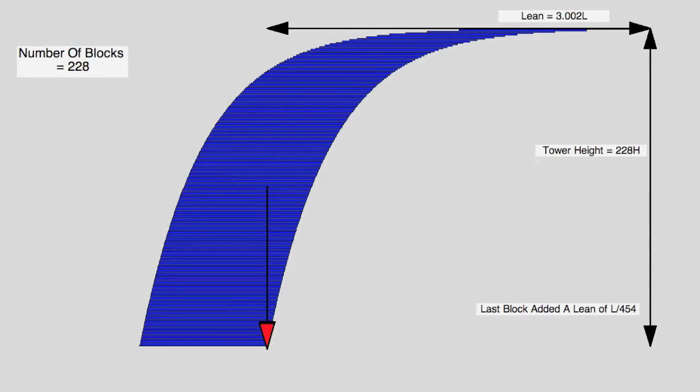So even though the extra increase you get for every block is approaching zero, it never actually gets to zero. So that gives you the interesting case where you can have an infinite lean with an infinite number of blocks. Now that in itself is impossible, but the interesting thing is that there's no limit on how far a tower can lean if you can build it high enough with enough blocks, which is pretty crazy really.